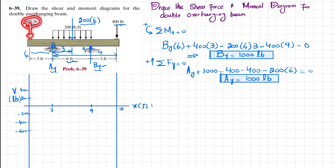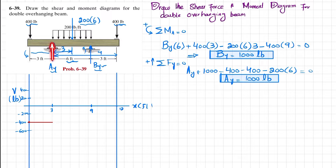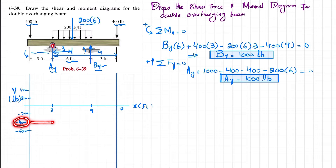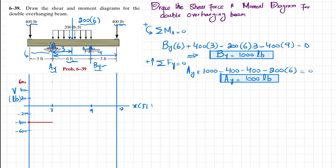At x equals zero we have a downward load of 400, so the first point is minus 400. Moving from that point to point A there is no other force, so shear force remains the same - we draw a horizontal line. At point A, Ay equals 1000, so minus 400 plus 1000 gives plus 600. The shear force suddenly changes to 600 pounds at this point.